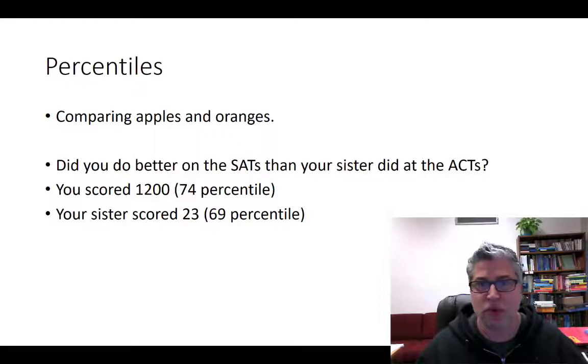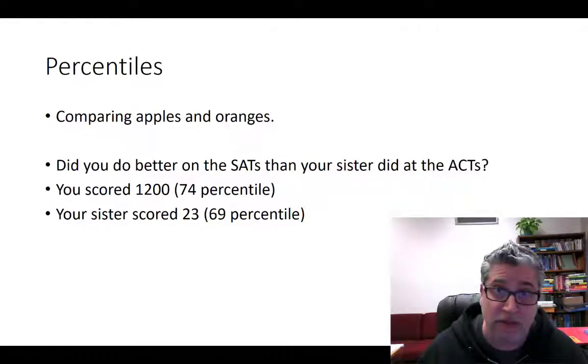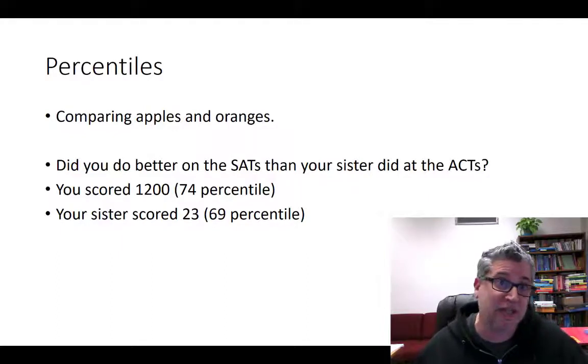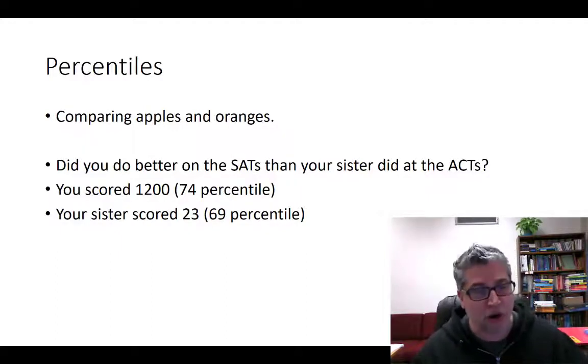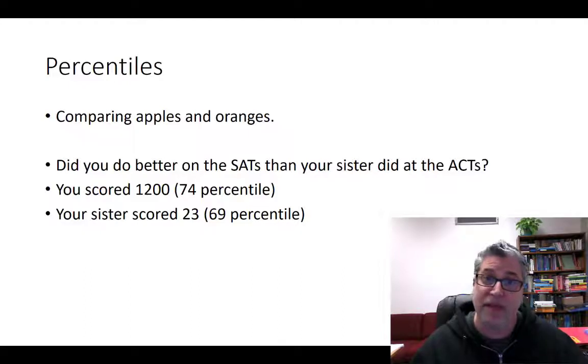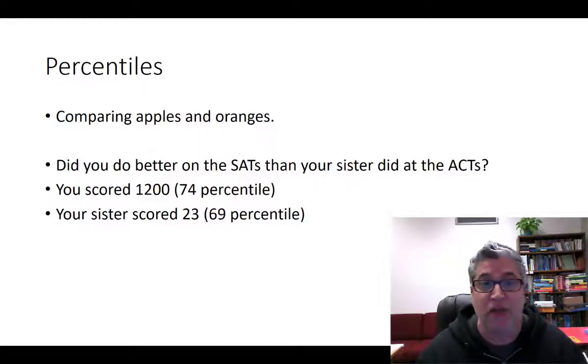If your sister scored a 23, that would put her in the 69th percentile. So, now you can compare those two percentiles because those percentiles are now on the same basis. They're not apples and oranges. They're both percentiles. So, you did better than your sister because 74 is a bigger percentile number than 69. So, cool, right?